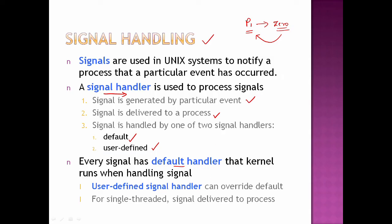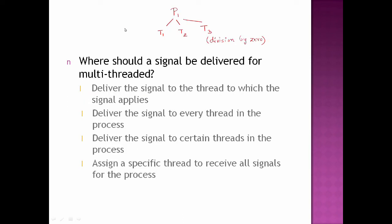So the user-defined signal handler can be used by the user-defined handler. This is not a single thread — if there is an error caused by the user-defined signal handler, if you look at the multi-threaded case, there is a process with multiple threads. For example, in T3 thread, we have a division by zero error, then there is a signal. The signal is given by the user via the kernel.